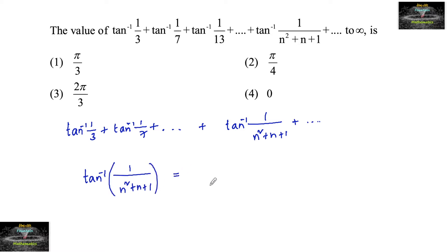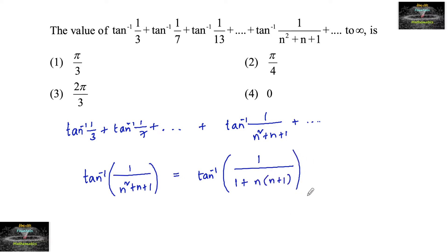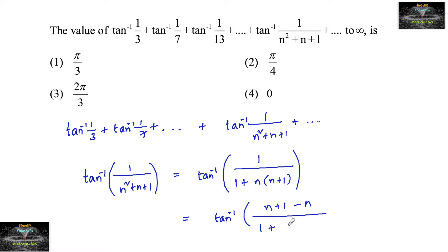We can write this as tan inverse of 1/(1 + n(n+1)), which in the numerator can be written as (n+1) minus n, and in the denominator 1 plus (n+1) times n.